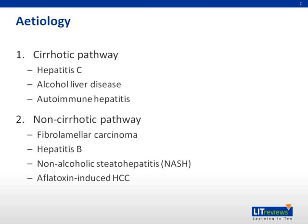It is important to understand the underlying etiology to form a clinical approach to liver cancer, because they suggest different pathogenic pathways. HCC most commonly forms from a cirrhotic pathway, and causes include hepatitis C, alcohol-related liver disease, and autoimmune hepatitis. This occurs through a chronic cycle of inflammatory damage and repair of hepatocytes, leading to mistakes during repair that result in carcinogenesis. There are other circumstances for HCC to develop without a cirrhotic liver, and common causes include hepatitis B, fibrolamellar carcinoma, and non-alcoholic steatohepatitis, or NASH.